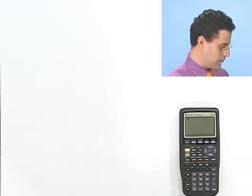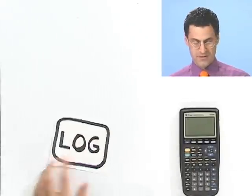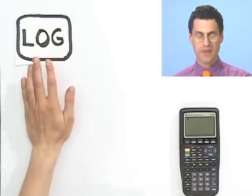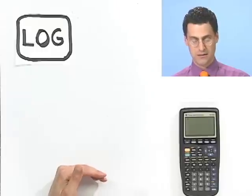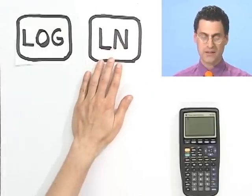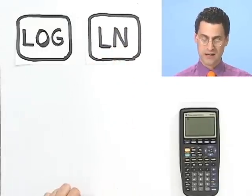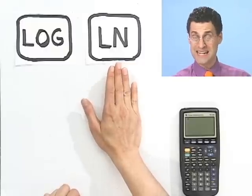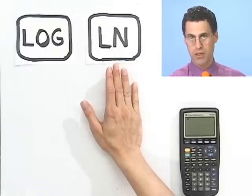There are two keys worthy of your attention at this point. There's the log key. Remember that means log base 10. And then there's the natural log key, the LN key. And that is the natural log, log base e, where e is 2.718...